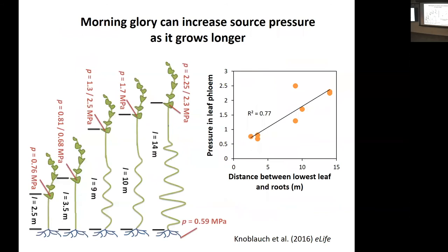One thing we found was that the pressure inside the leaves increased as the morning glories got taller. We altered length partly by manipulating where the lowest leaf was, creating different source-to-sink distances across a handful of plants, and measured pressure in the phloem at those top leaves. As plants got longer, the pressure inside the phloem in the leaf increased. This is really cool — it suggests these plants may be compensating by pressurizing their phloem more.